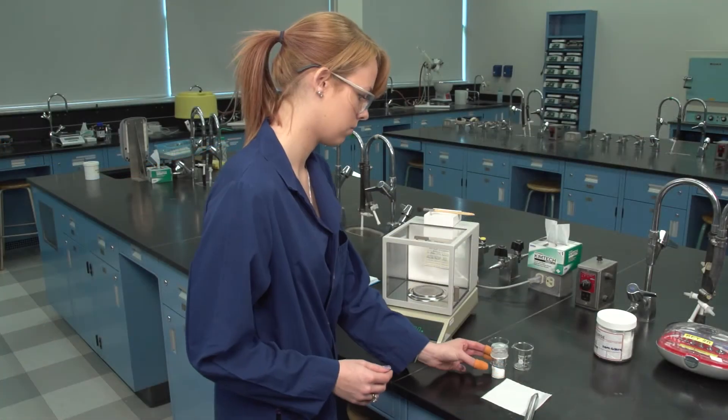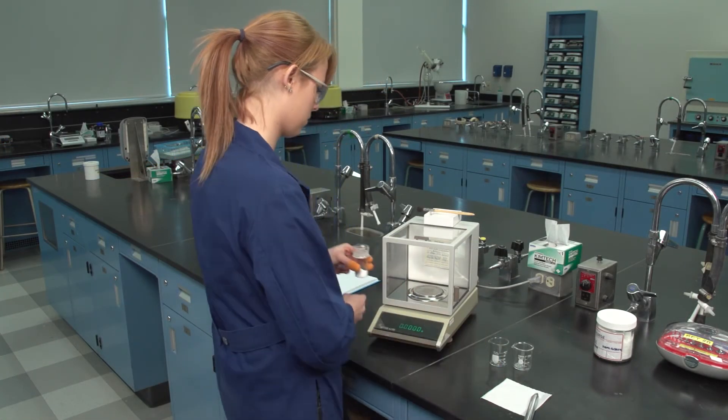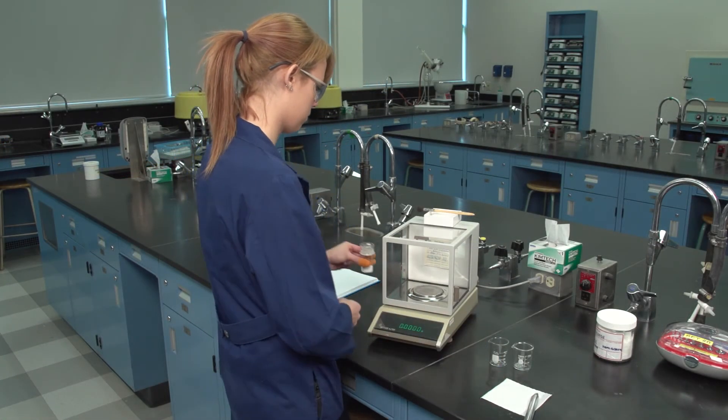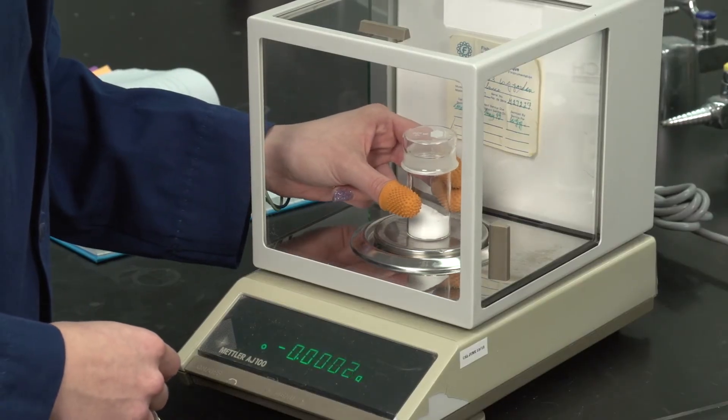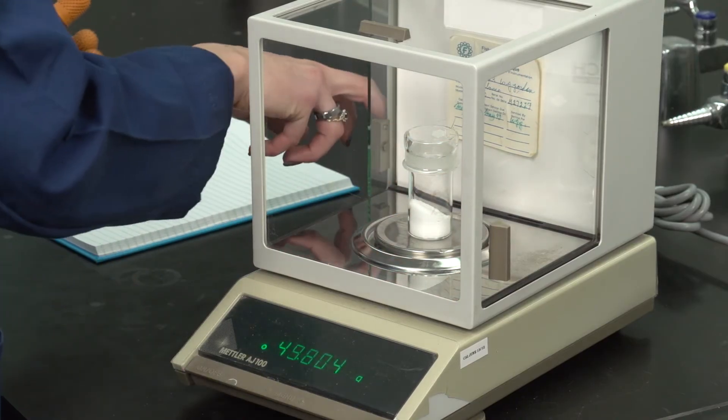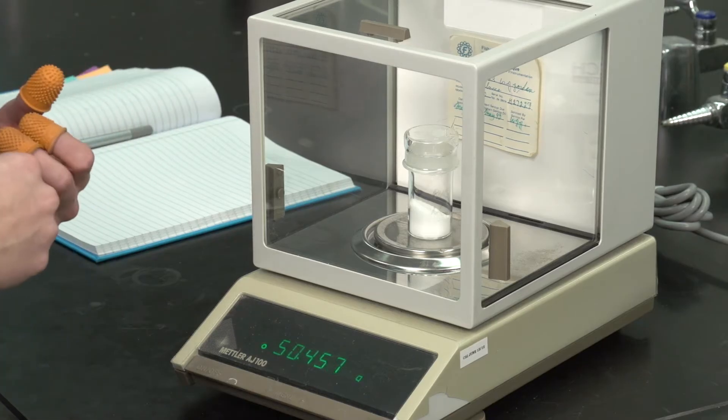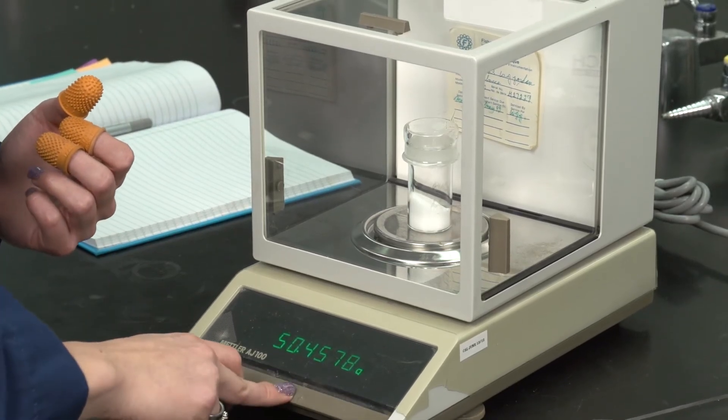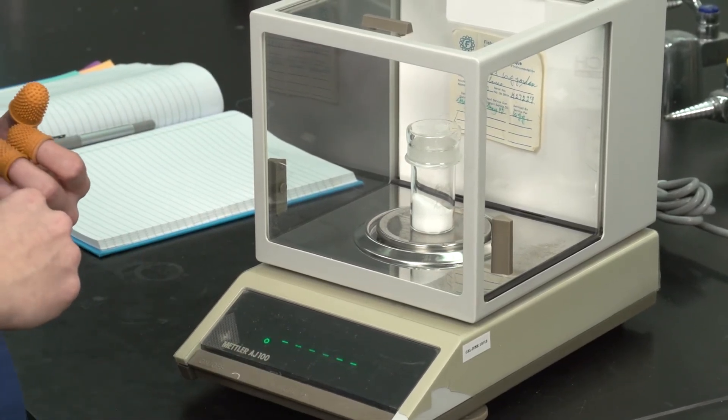Without touching the bottle with your fingers, place the weighing bottle on the analytical balance and press the tare to reset the balance to zero grams.